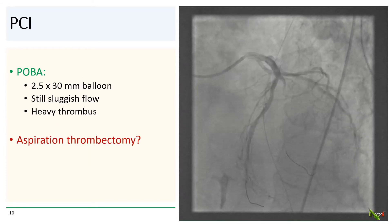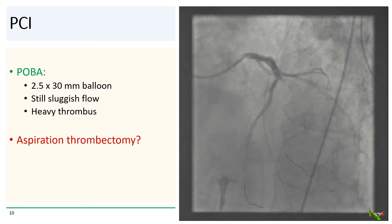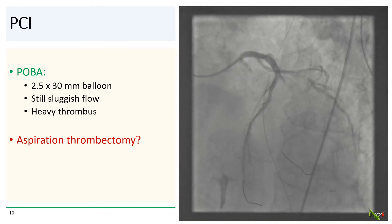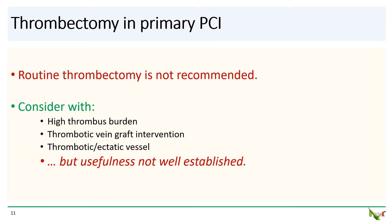We went ahead and dilated the diagonal with a long 2.5 by 30 millimeter balloon, but flow was still sluggish. There appeared to be a large amount of thrombus in the vessel. Would aspiration thrombectomy be indicated in this scenario? In general, routine aspiration thrombectomy in primary PCI is no longer recommended. However, it may be considered in select scenarios such as vessels with a high thrombus burden, PCI in a thrombotic vein graft, or highly ectatic thrombotic vessels. But even in these cases, the usefulness of aspiration thrombectomy is not well established.